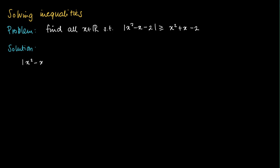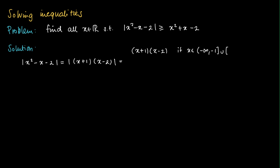First we try to get rid of the absolute value signs. The absolute value of the quadratic term depends on the sign of the quadratic term itself. We may factorize it as x plus 1 times x minus 2, from which we see that x plus 1 times x minus 2 is positive if x is in the set minus infinity to minus 1 union 2 to infinity. So then we get a plus sign, giving just x plus 1 times x minus 2.